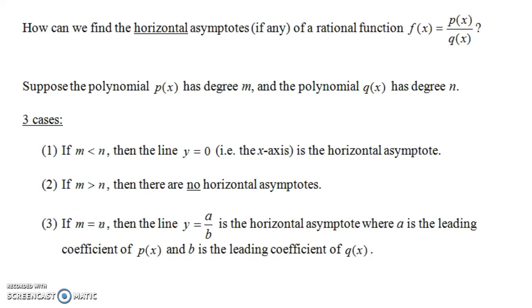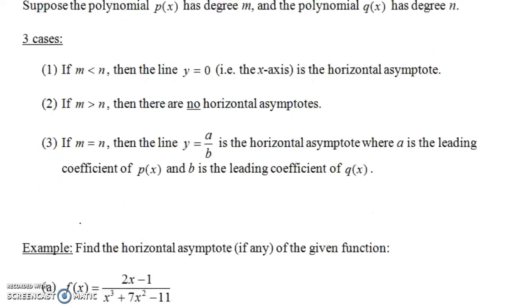And finally the last case: if the numerator and denominator have the same degree, then the line y equals a over b is the horizontal asymptote, where a is the leading coefficient of the polynomial in the numerator and b is the leading coefficient of the denominator. So we have these three cases.